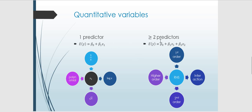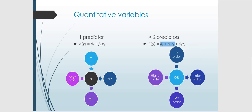For two or more predictors, we have multiple linear regression, which can be written with terms from beta-1 X1 all the way to beta-p Xp. The question is whether we really need just a first-order model, or whether we need to include interaction terms or second- and higher-order terms. We will consider what functional form should be properly placed on the right-hand side of the equation in the case of quantitative variables.